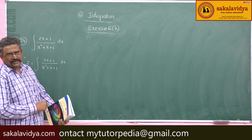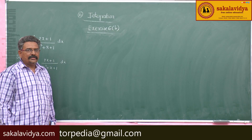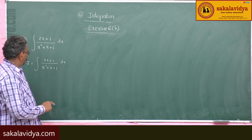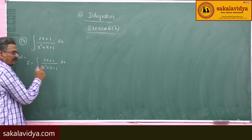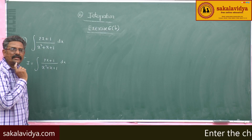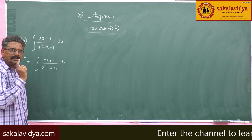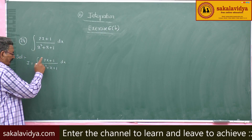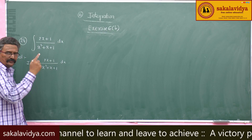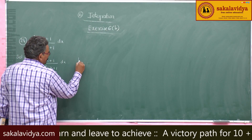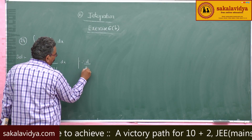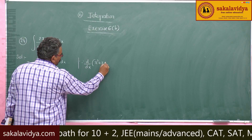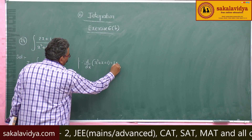What do you observe in this problem? Just by observation, we can see that (2x + 1) is nothing but the derivative of (x² + x + 1). Derivative of x² is 2x, derivative of x is 1, derivative of 1 is 0. That means d/dx of (x² + x + 1) is equal to 2x + 1.